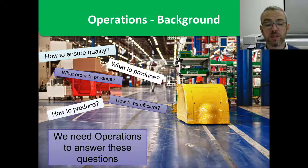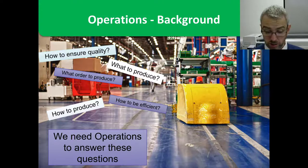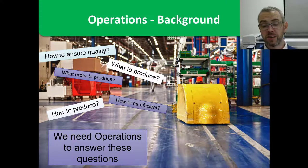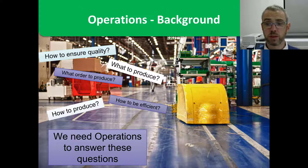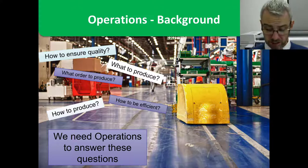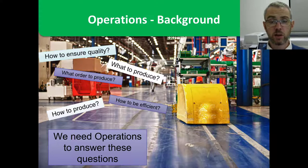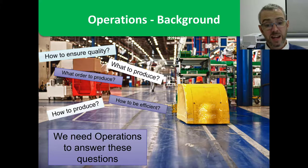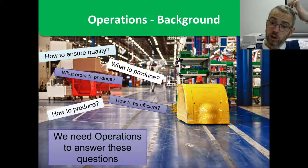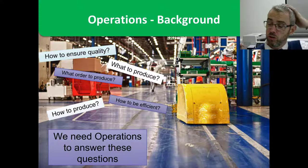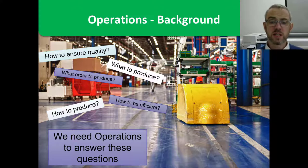So we've got what to produce. How do you ensure quality? You want your consumer to keep coming back - you don't want anybody receiving defective goods because it tarnishes your reputation and doesn't help with your cost base. If a defective product gets to a consumer, they send it back and you have to scrap it. That leads on to how to be efficient: are we going to automate, use loads of labour, what kind of systems are we going to put in place?